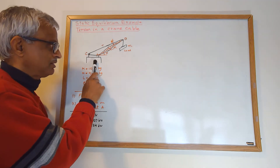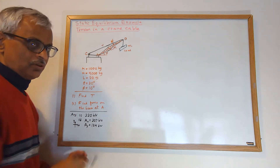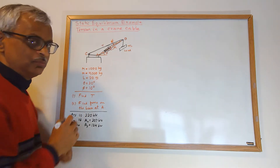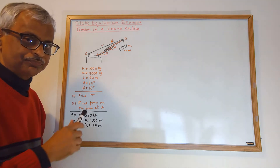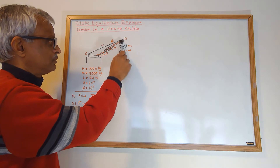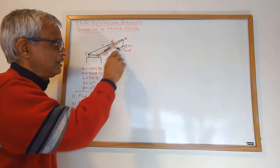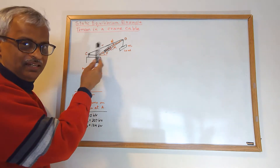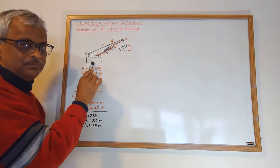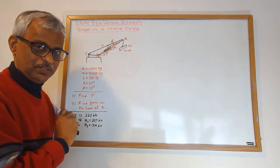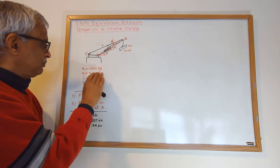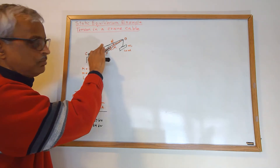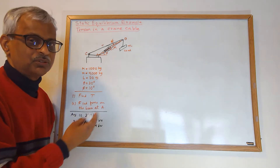Here you have the base of a crane. A to B is called the boom of the crane. There's a cable that goes over a pulley where the load is supported, and there's a base which balances the whole thing. The question we want to answer is: what is the tension in the cable?